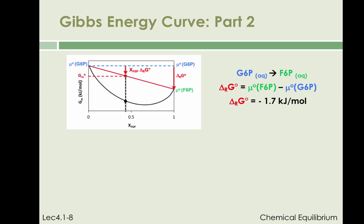On this slide, we calculate the Gibbs energy of the reactive mixture per mole of mixture, assuming, for the sake of keeping the calculation simple, that the reactive mixture forms an ideal solution. First, we write that the molar Gibbs energy of the reactive mixture is equal to the mole fraction of F6P times the chemical potential of F6P, plus the mole fraction of G6P times the chemical potential of G6P.